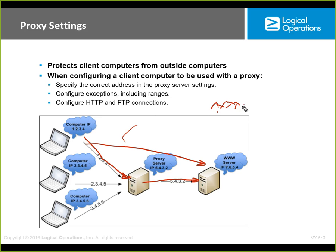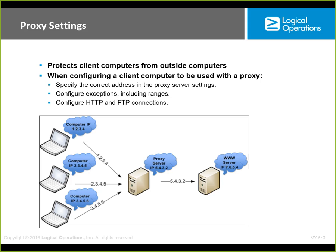The predominant proxy server is HTTP. There are free ones you can run at home. We can specify the correct address, configure exceptions including ranges, and include HTTP and FTP connections. We used a proxy server at ECPI for content limitations. One problem is filtering character strings — if you filtered the string 'SEX,' it would also block 'Sussex.' You have to be careful how you construct the filters.